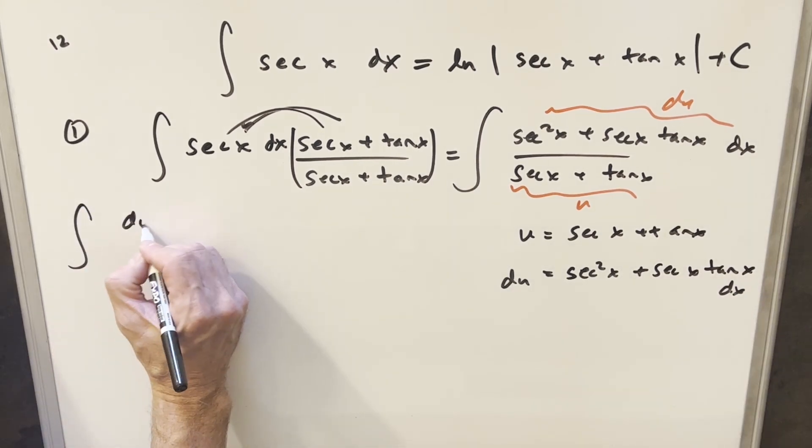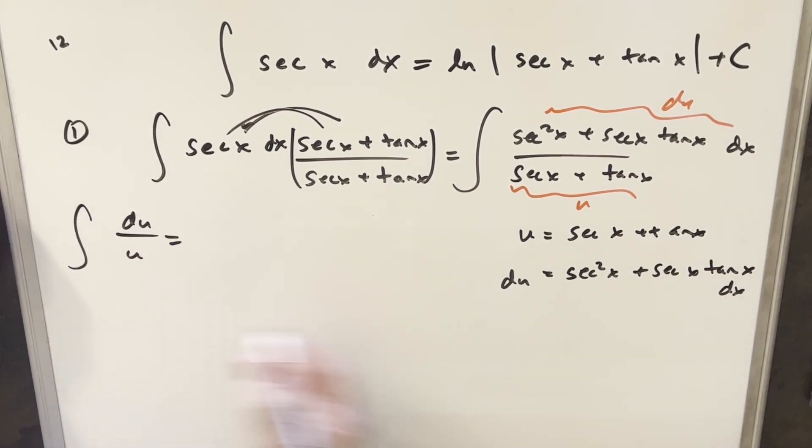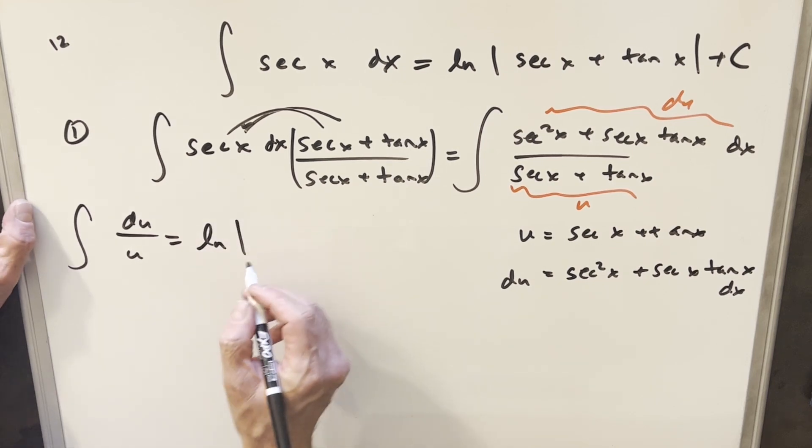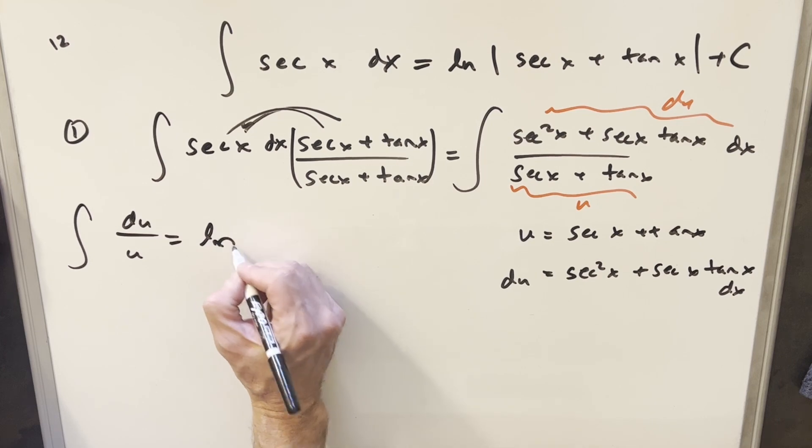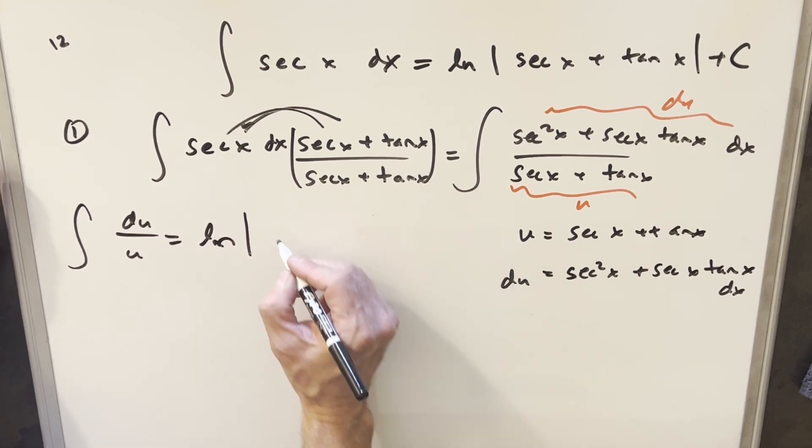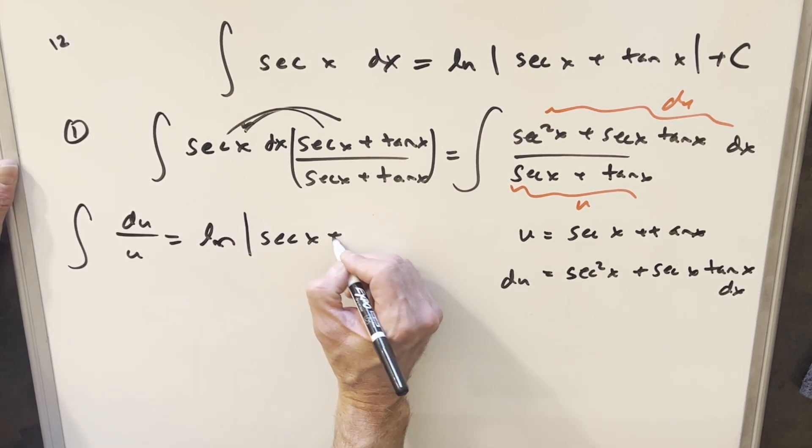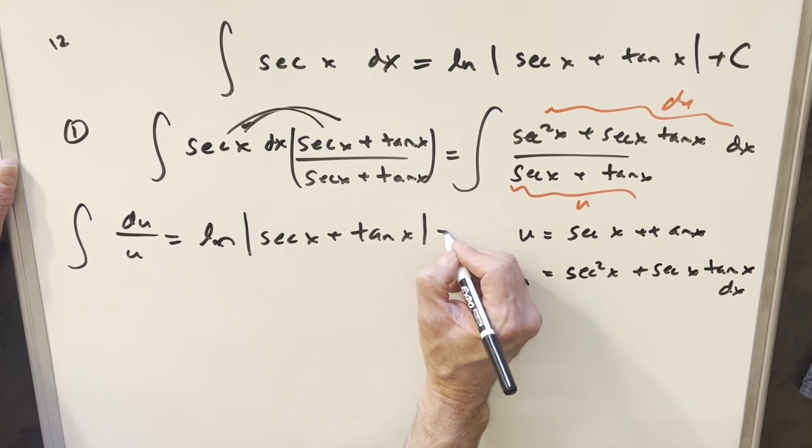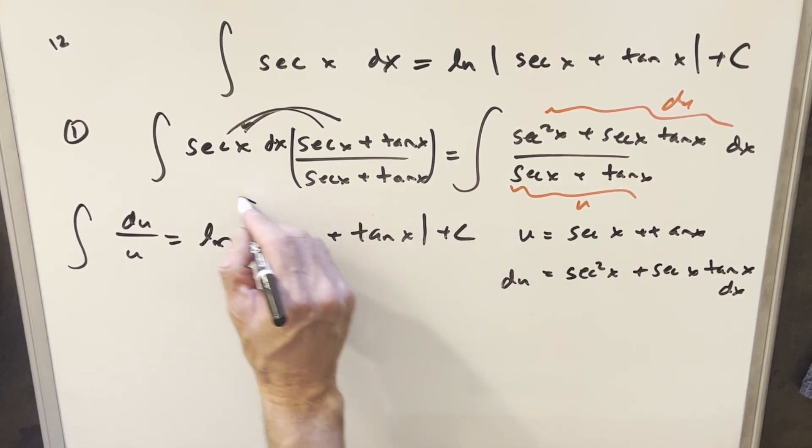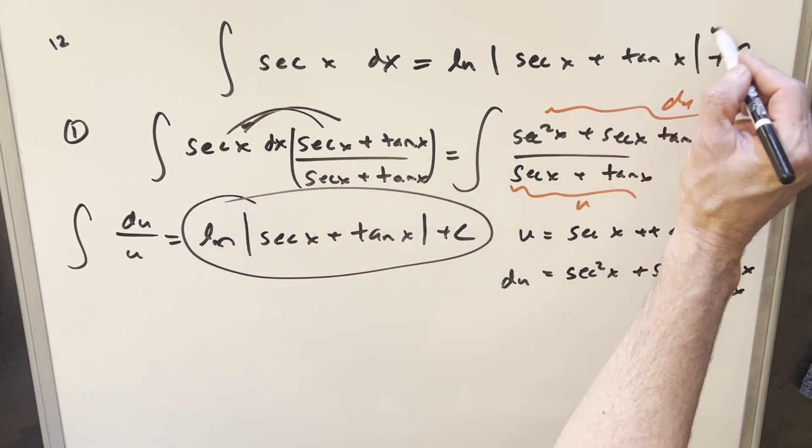So I'll make this substitution. Of course we just have du over u, then integrating this we're gonna have natural log of the absolute value of u. I'll just back substitute in one step, so we'll have natural log absolute value secant x plus tan x plus c, and that's gonna match the solution we have right there.